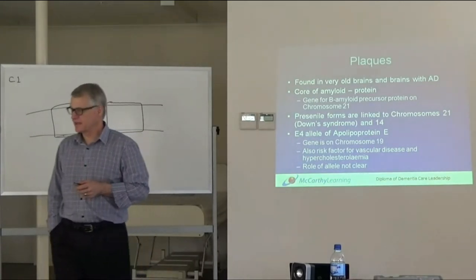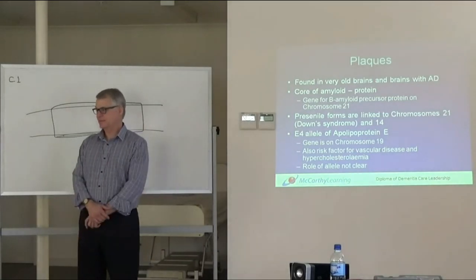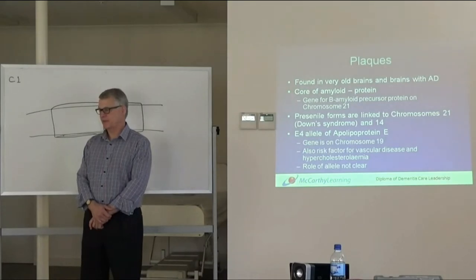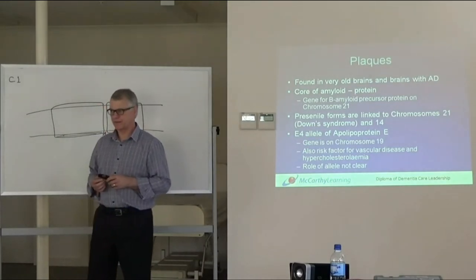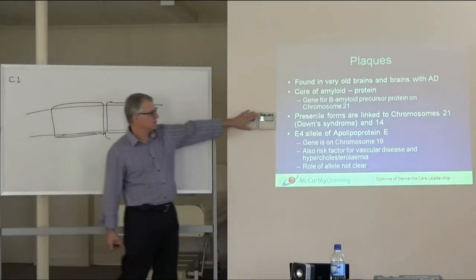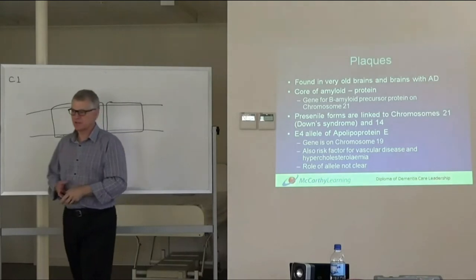Chromosome 21 is associated with Down syndrome. We know that people who have Down syndrome are going to develop Alzheimer's disease should they live long enough - a hundred percent chance. A student mentions having a resident with Down syndrome who was 50 but looked much older. The instructor notes they tend to age more quickly. Pre-senile forms are linked to chromosome 21 and chromosome 14.